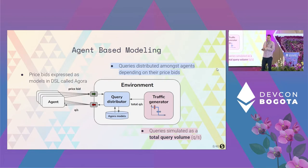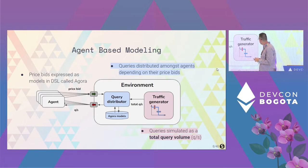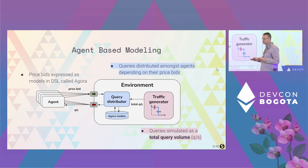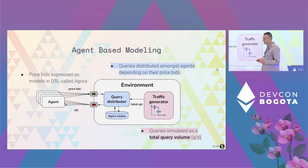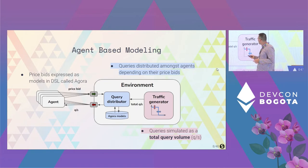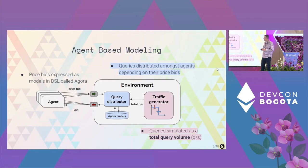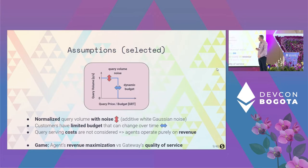Here's how we model the scenario. We get rid of customers for simulation purposes and use a traffic generator that sets the query volume at a given time step. We also have a query distributor that looks at agents' bids. Agents put their bids, and depending on those bids, queries are distributed across the different agents. Those bids are expressed in a domain-specific language called Agora — that's why we call the product Auto Agora, because it automates that bidding, otherwise indexers would have to create price models manually.